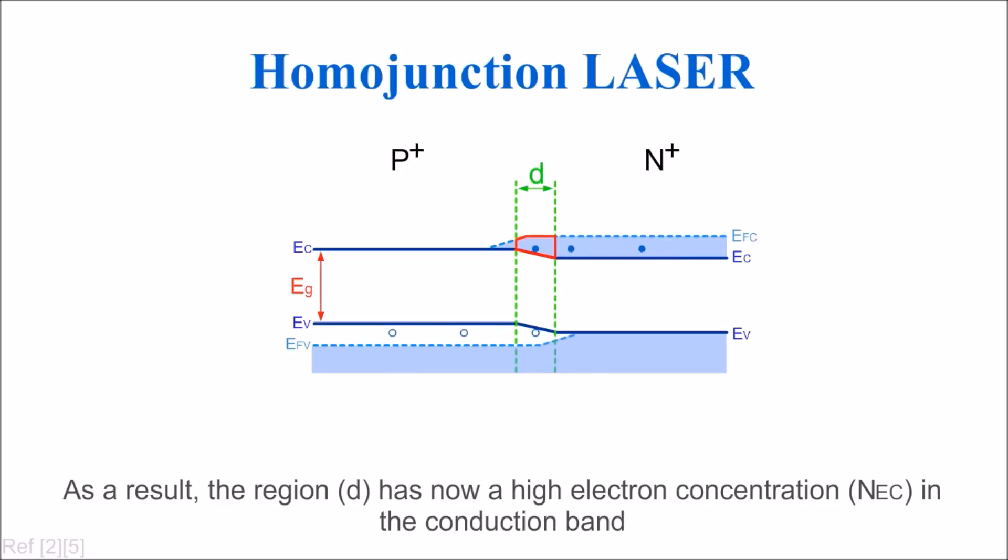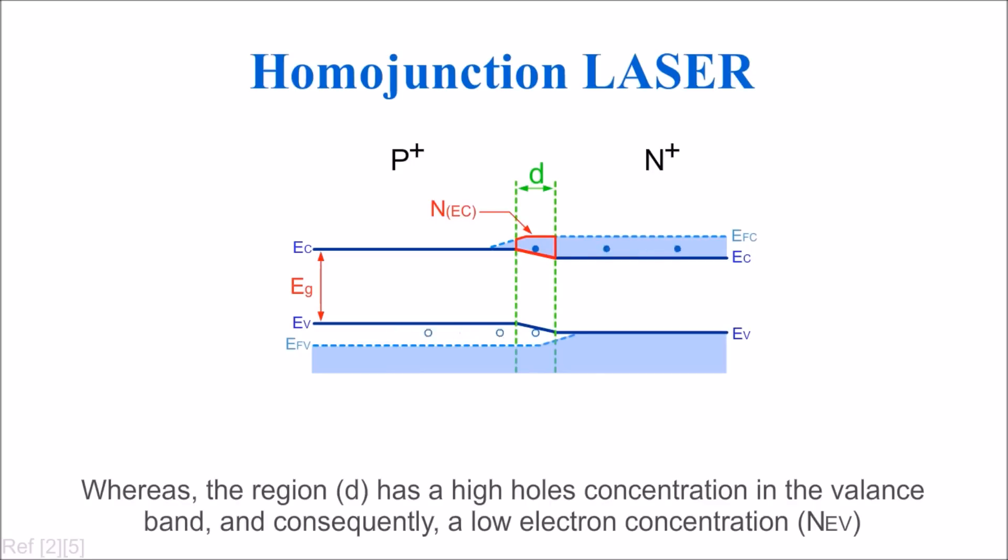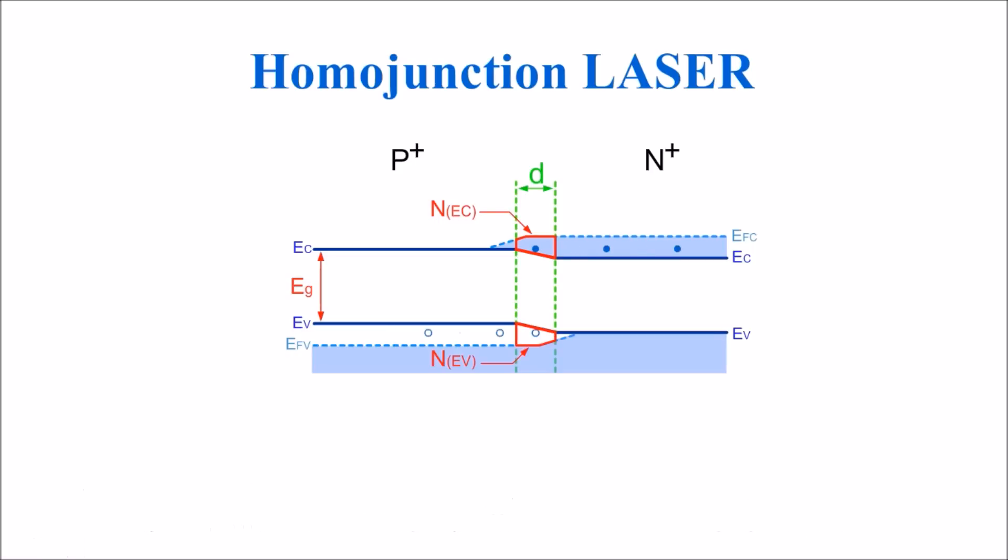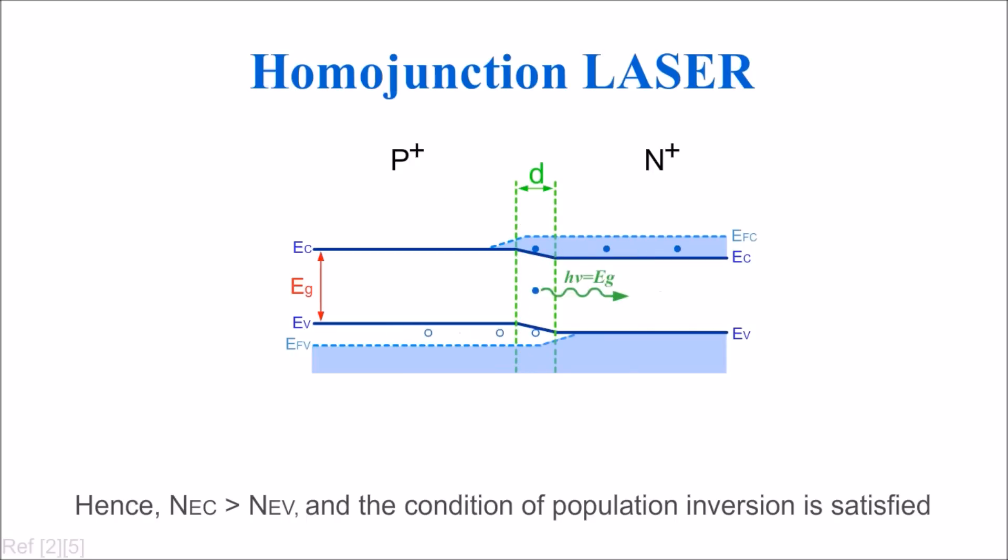Whereas the region d has a high hole concentration in the valence band and consequently a low electron concentration nEv. Hence, nEc is larger than nEv and the condition of population inversion is satisfied.